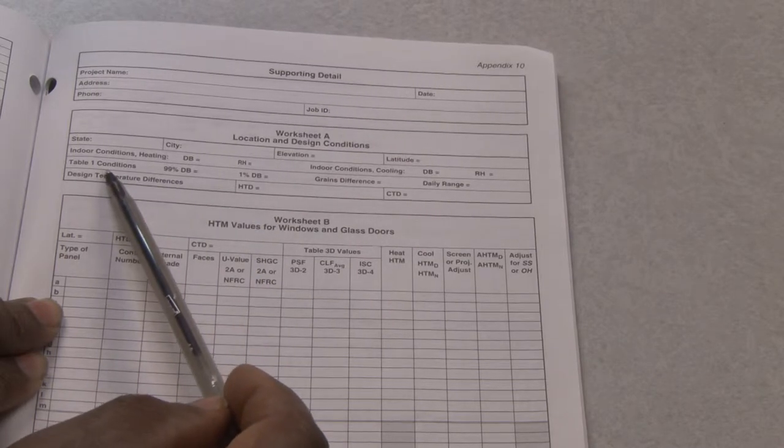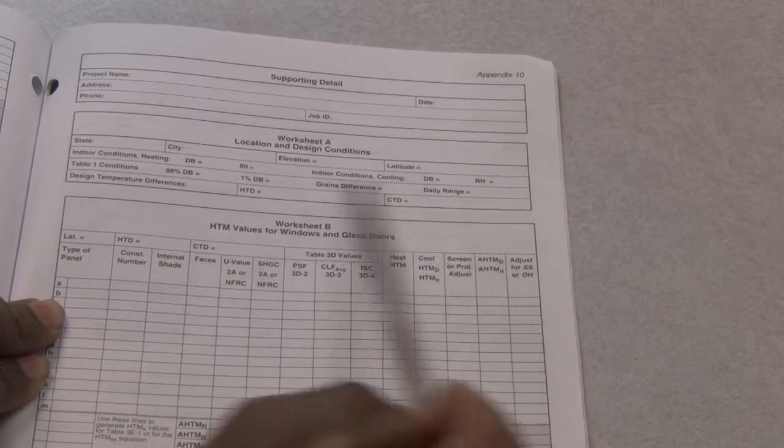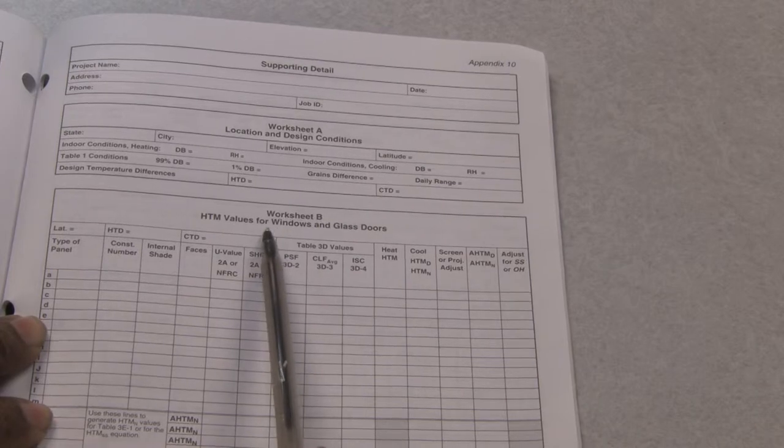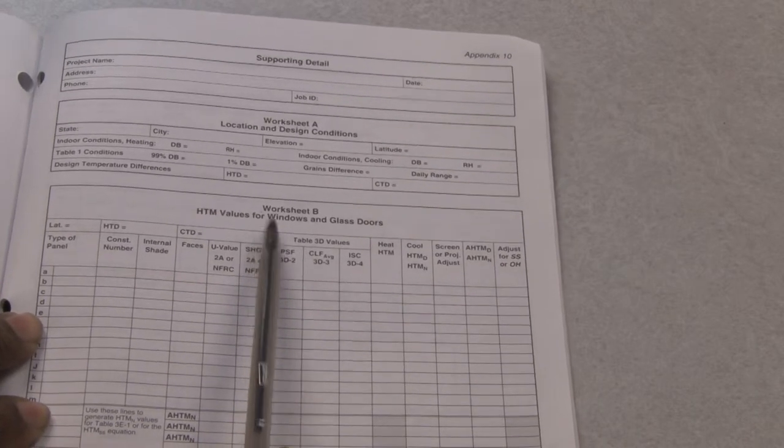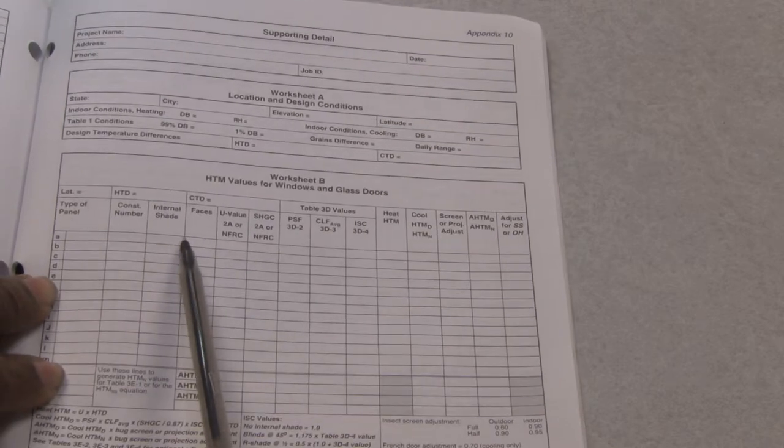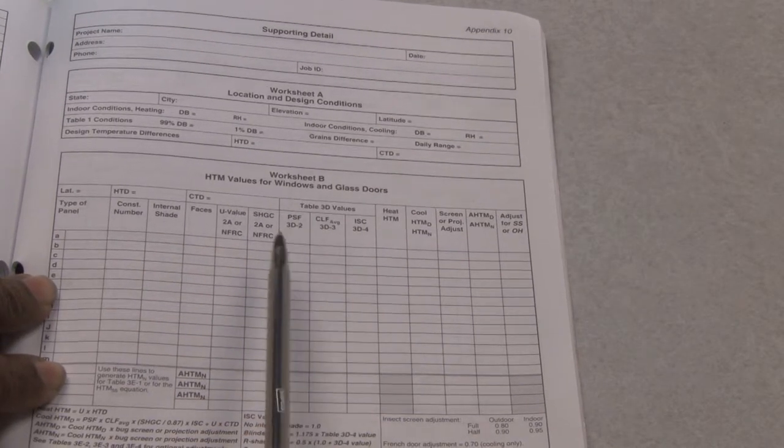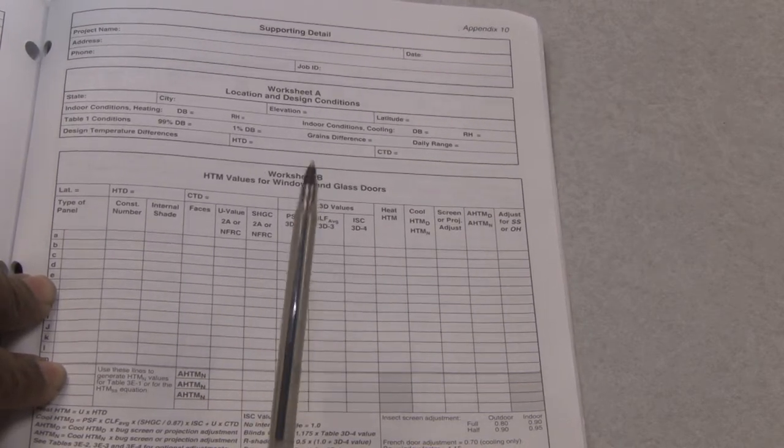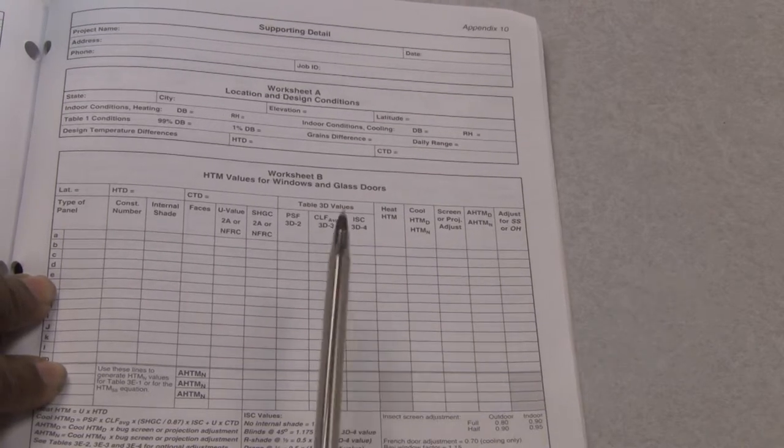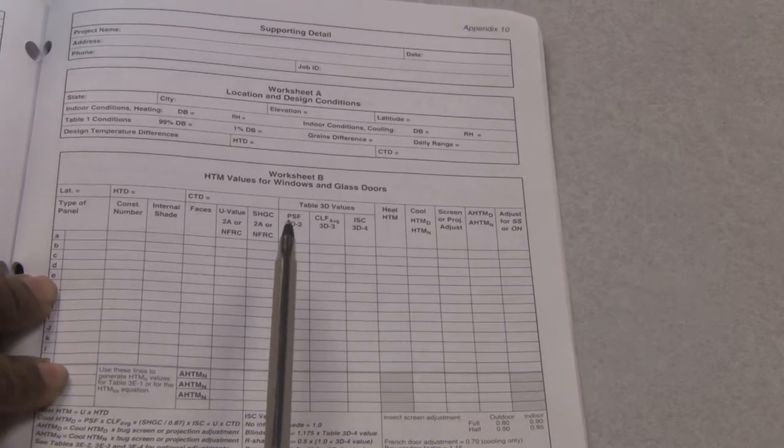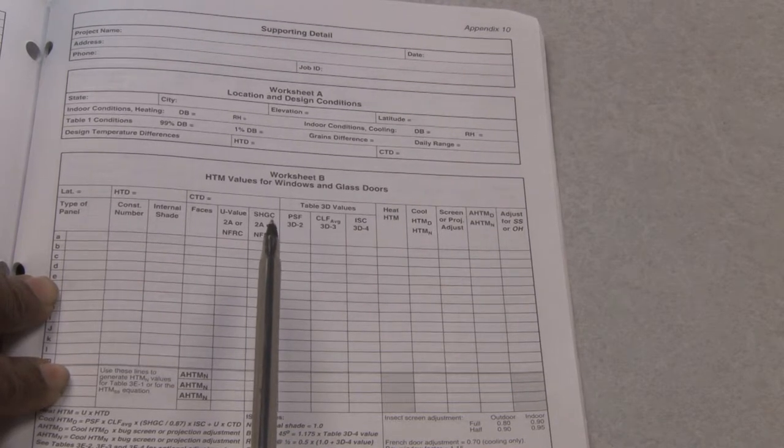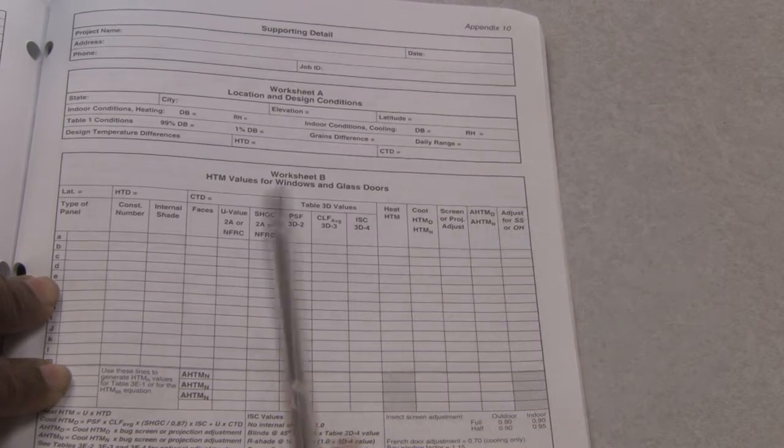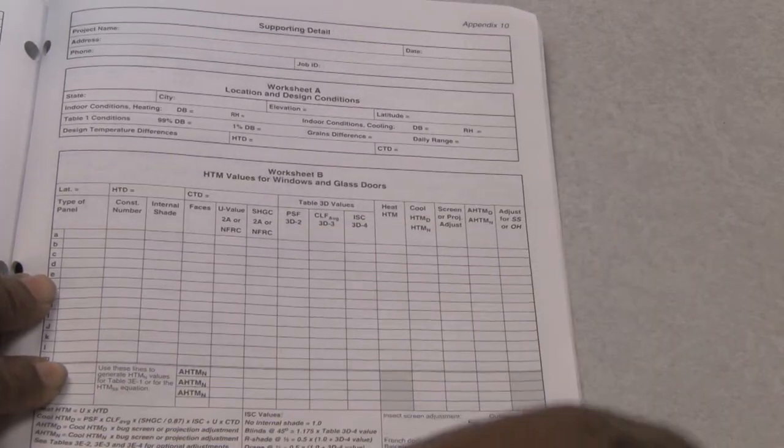When we get into worksheet B, now we're looking at what the construction of the house. We're looking at the type of windows you have, the values of it. What is the windows constructed of? If it's wooden windows, or if it's vinyl windows, is it a double pane, or is it a single pane, or is it a triple pane? Is it low E windows? All those will make a difference in how you would lose or gain heat through a window. So it's very important that we be very accurate as we're filling out this information.